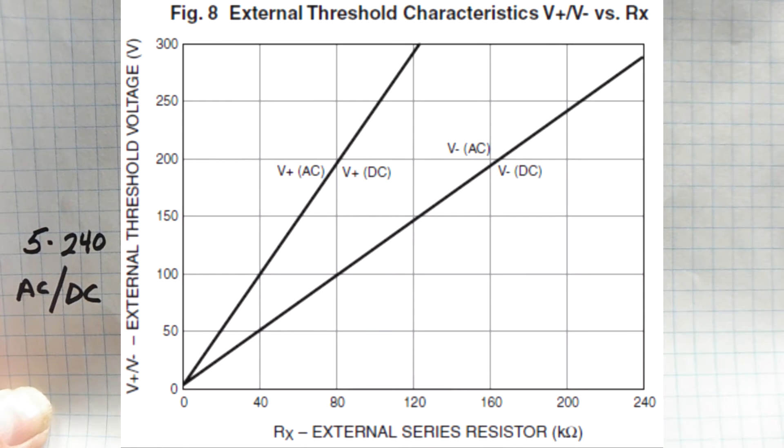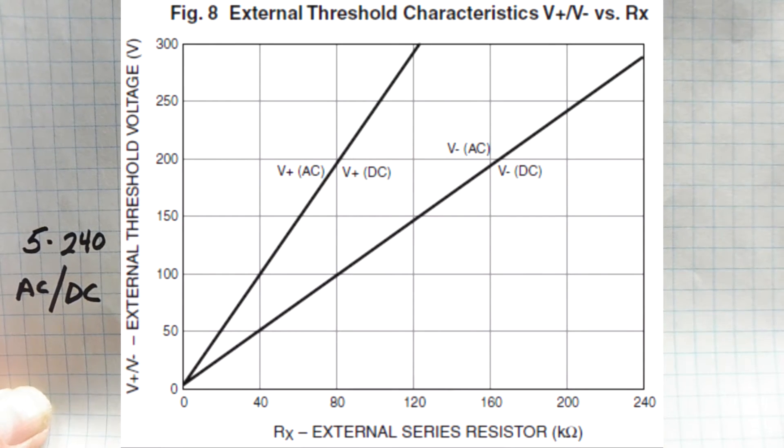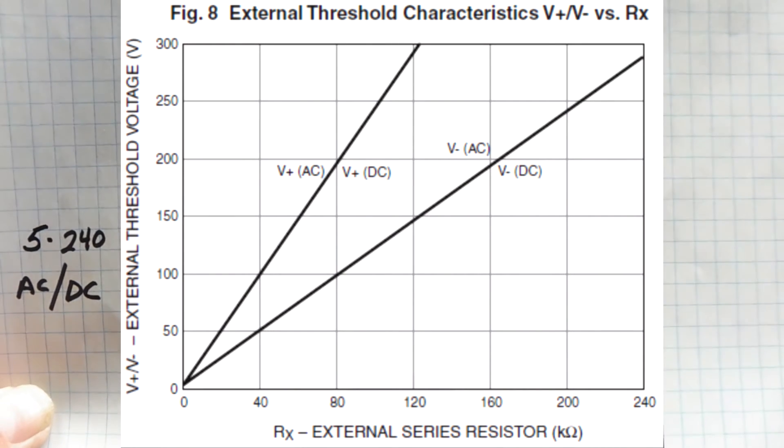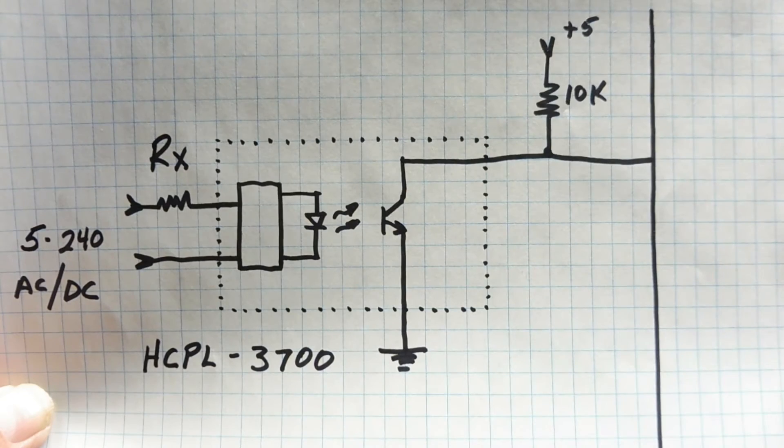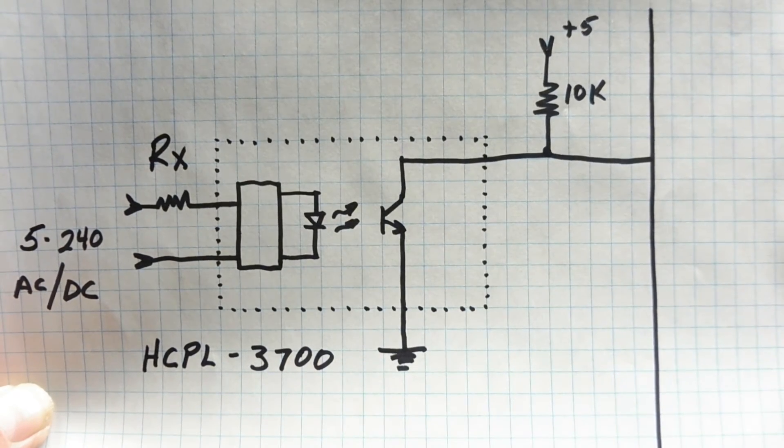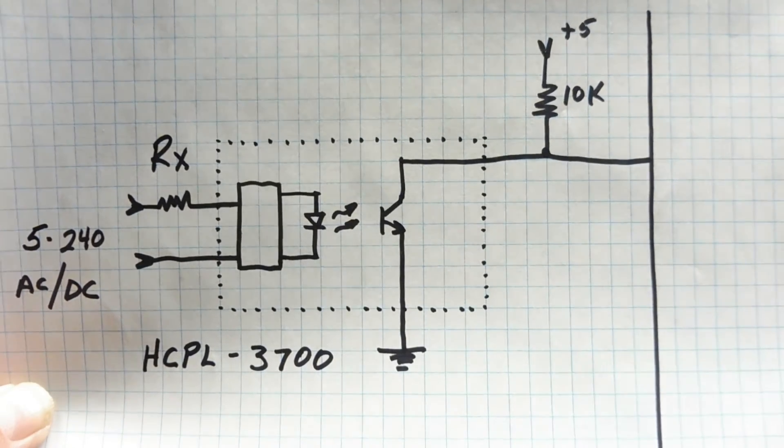All you have to do is calculate RX, that's the input resistor, for your threshold input voltage. If you look at the data sheet and you look at the external threshold characteristics chart, it'll tell you how to calculate RX for your input threshold. This is the HCPL 3700. It's a little bit pricey, but it might be worth it.